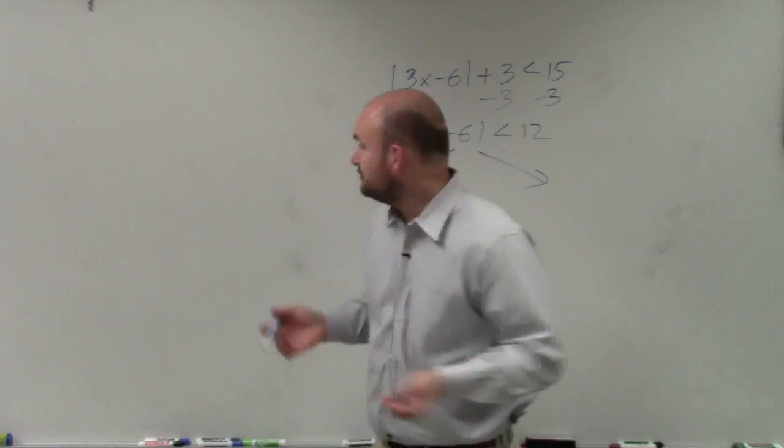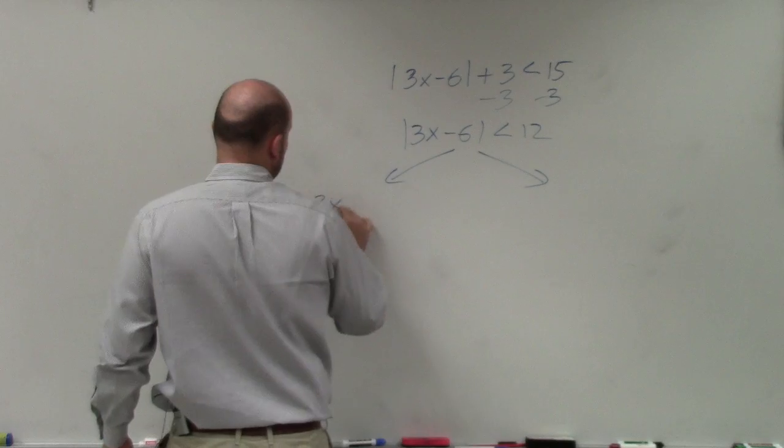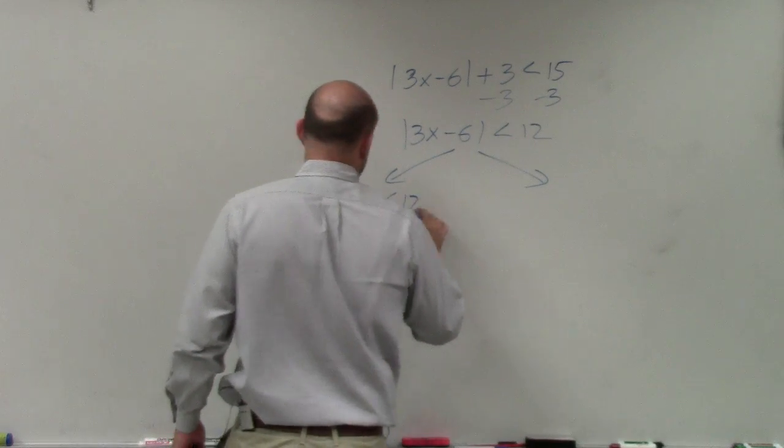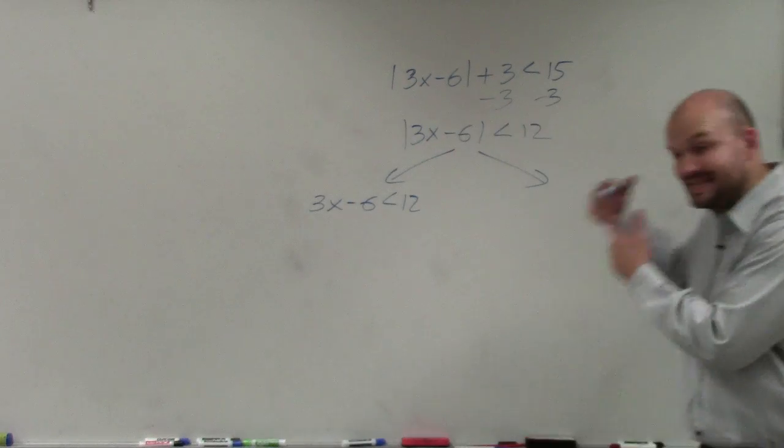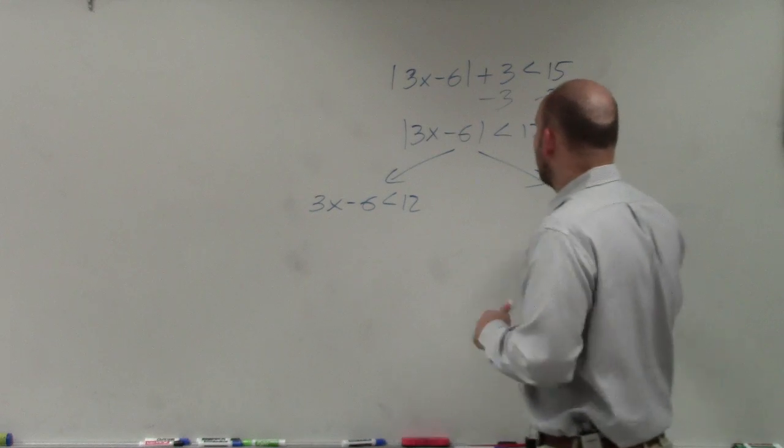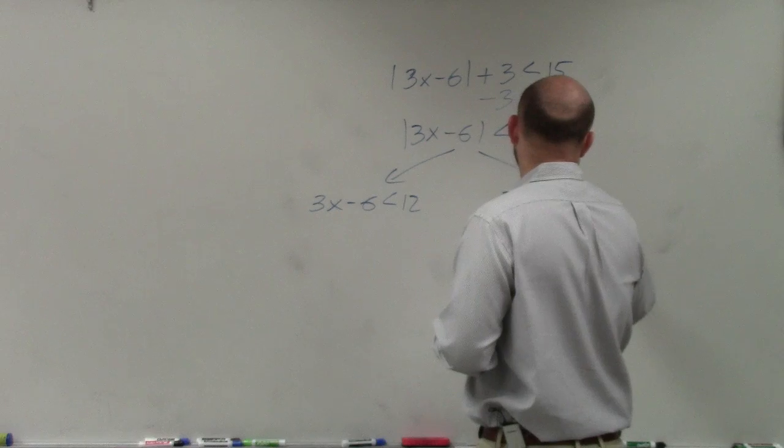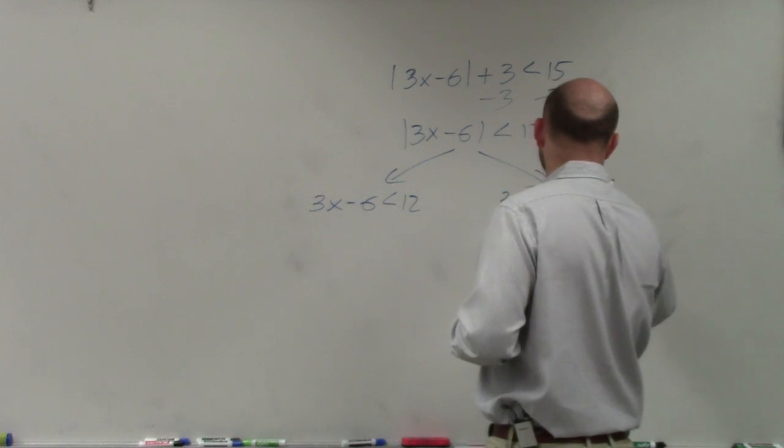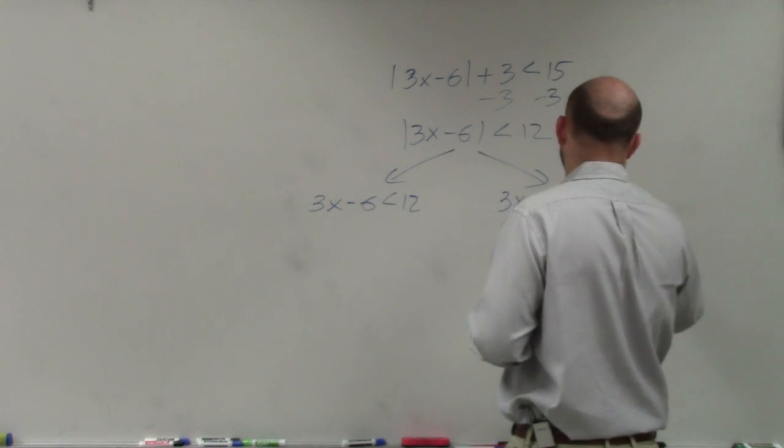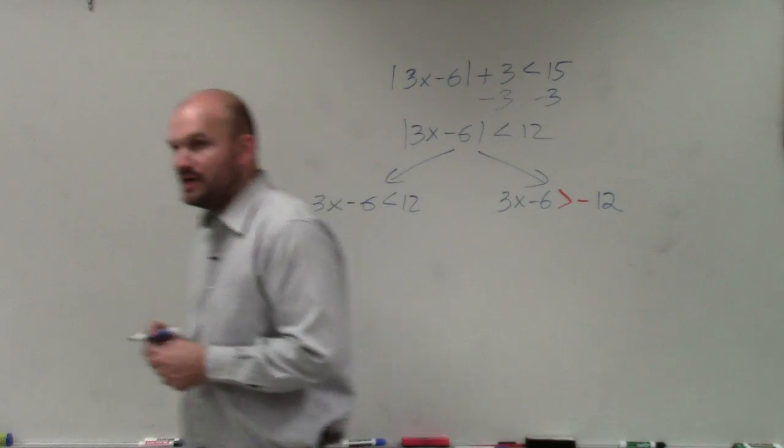Again, just like the last problem, you're going to create the case 3x - 6 < 12. And then since we're going to negate the other side, we have to flip the sign. 3x - 6 > -12. Everybody follow?